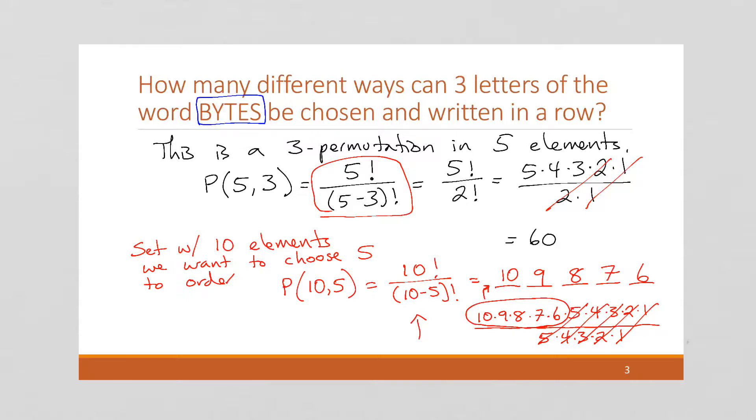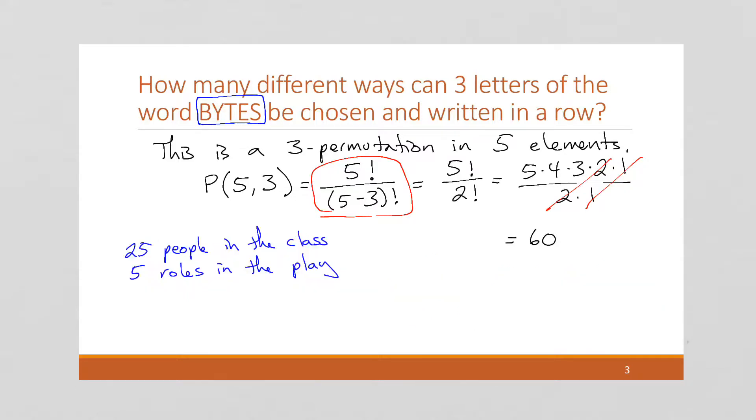One thing this is good for is say you have a class and you want to put on a play. And the class, there's only five spots in the play, but there's 20 people in the class. So what do you want to do? Well, if you have 25 people in the class and five roles in the play and you want to be fair about it, what if you just drew five names out of a pot?